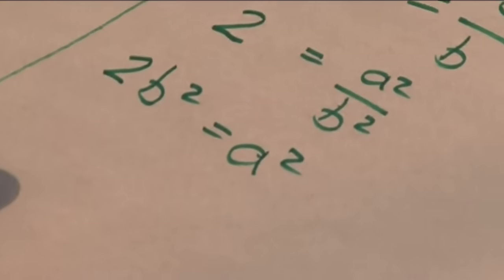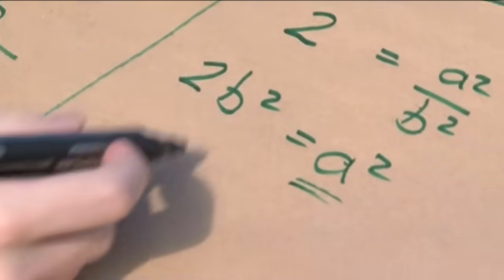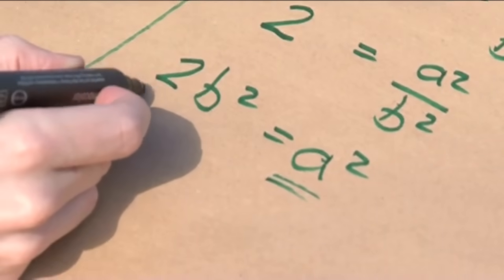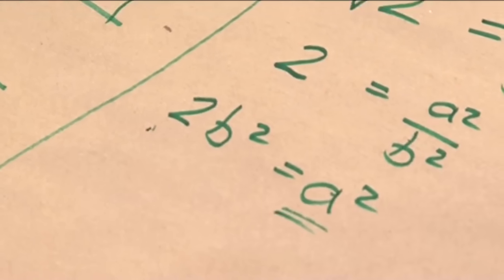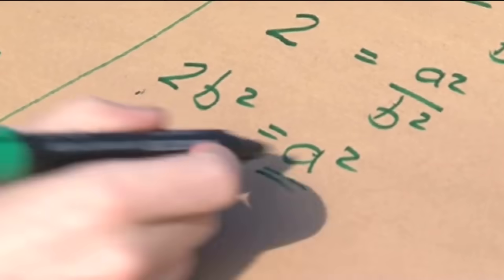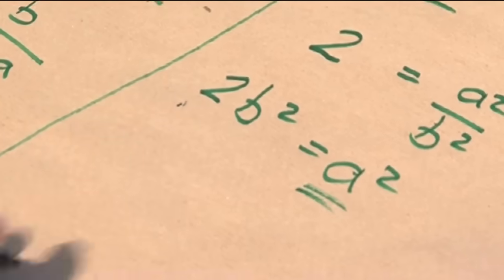Now what I've shown here is I've shown that a squared is even. Because it's a multiple of 2, it's an even number. And you can show that because a squared is even, a is even as well.